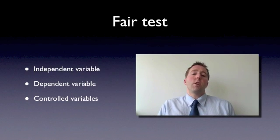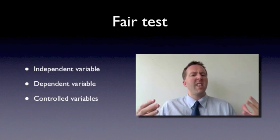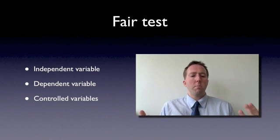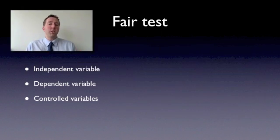There's also dependent variables. That's the one that we measure. In an experiment, we're always trying to observe or measure things to find out a result. The dependent variable is the thing that can change that we measure.